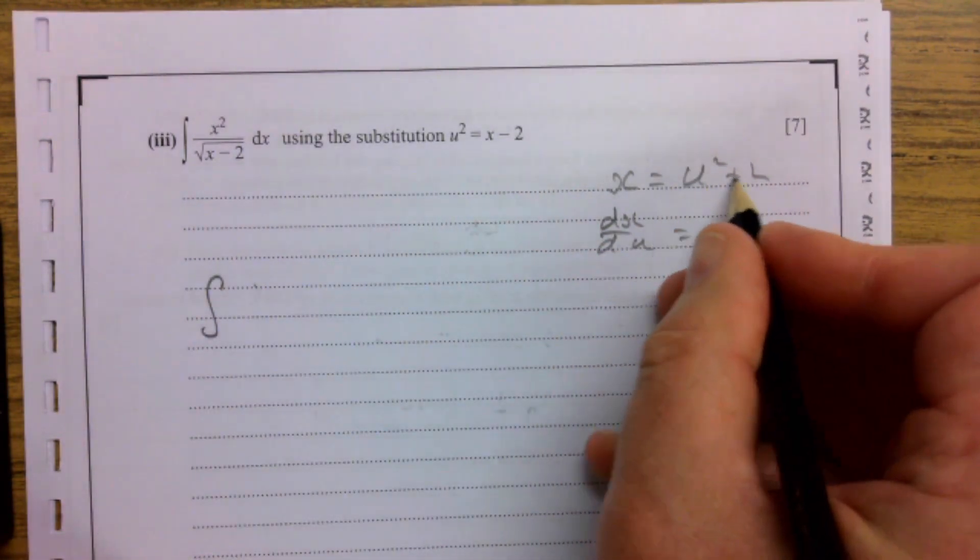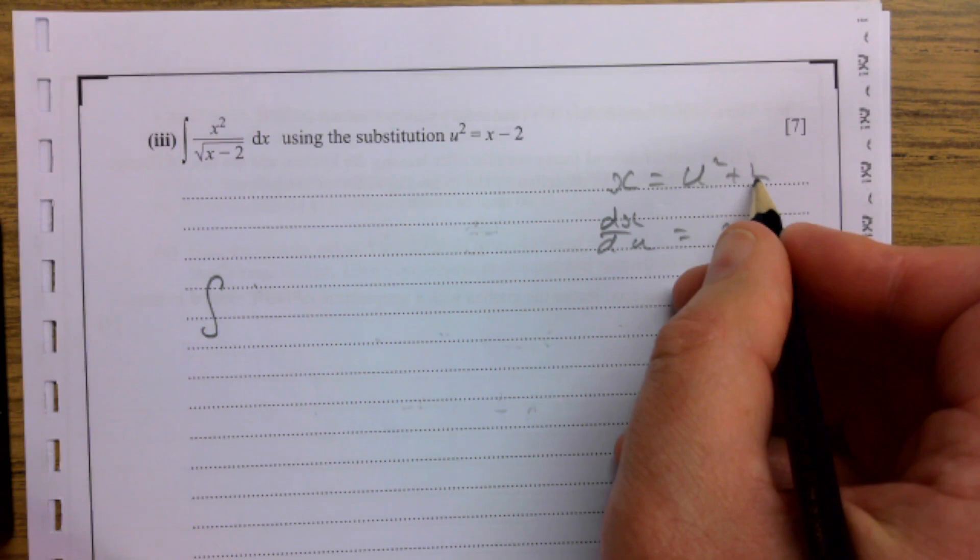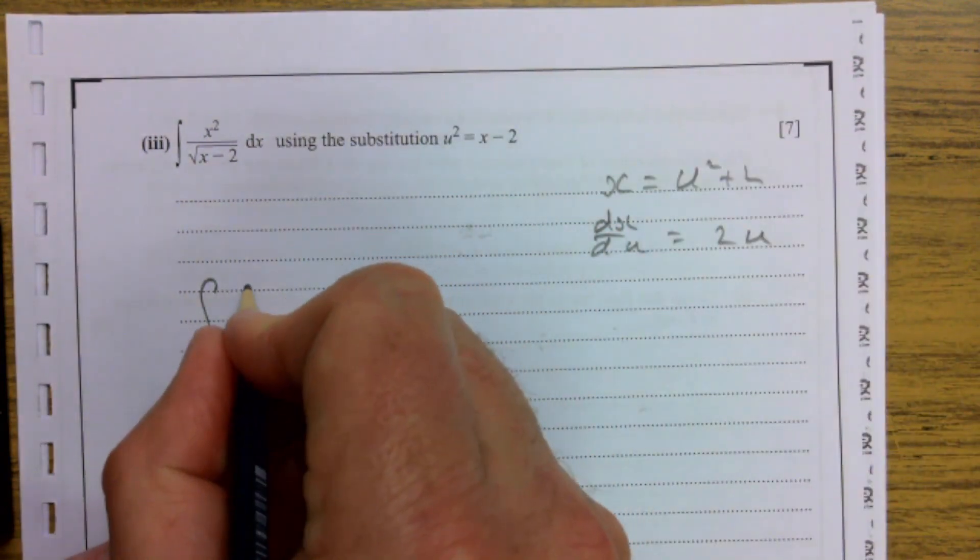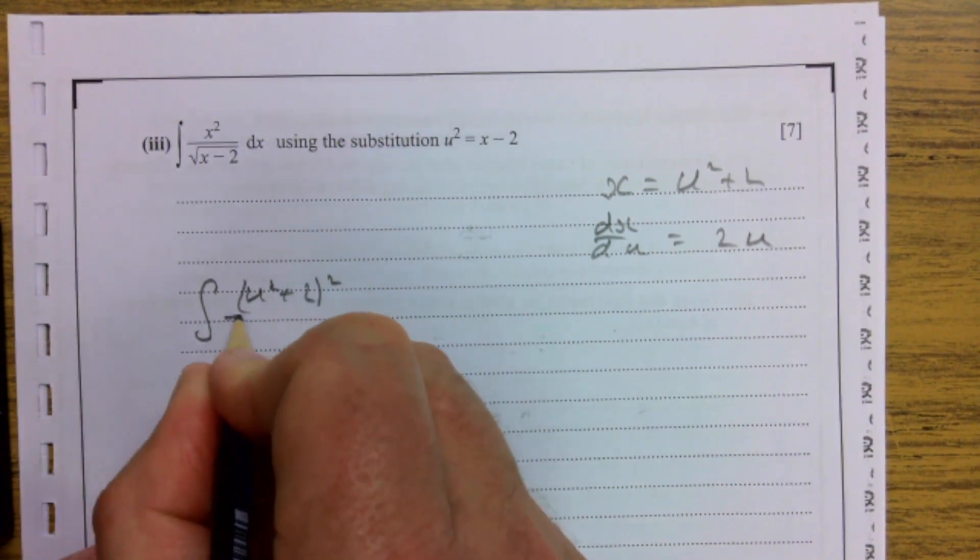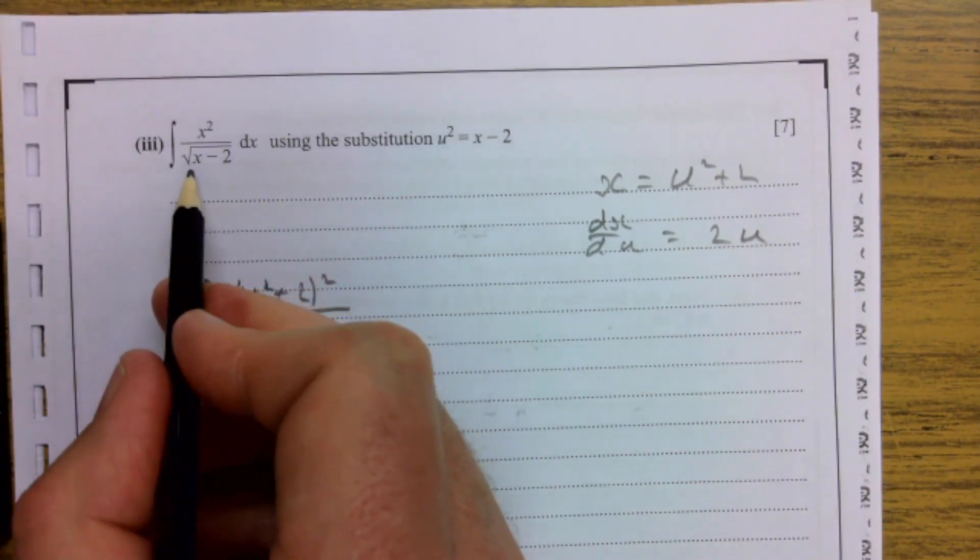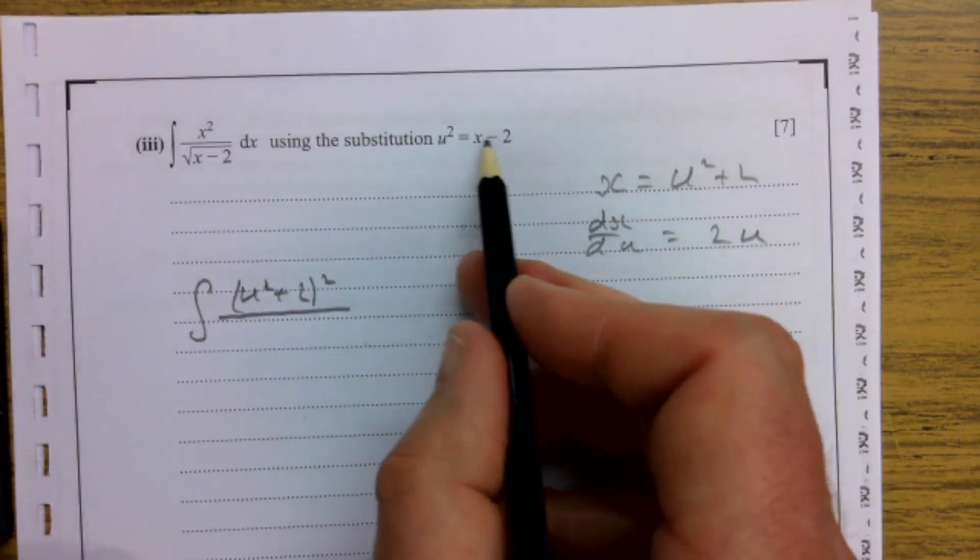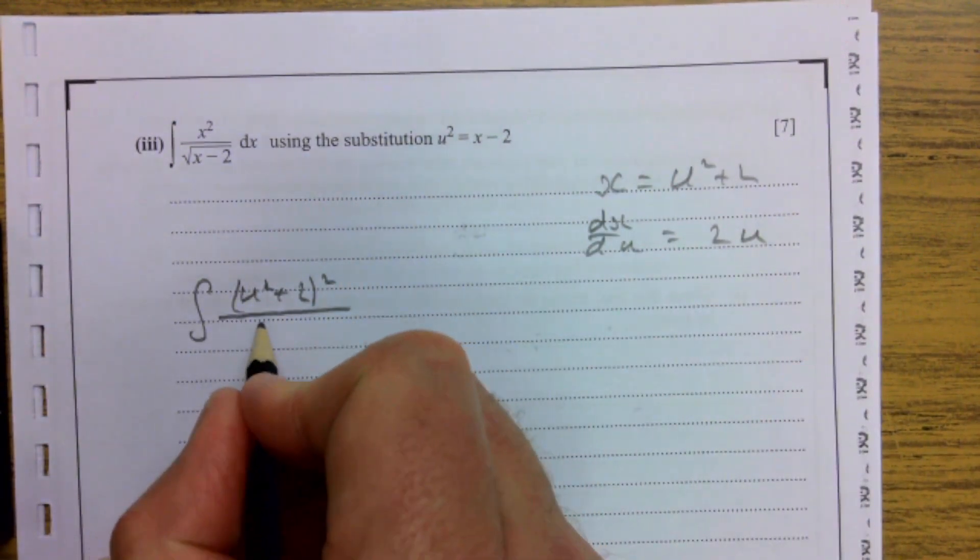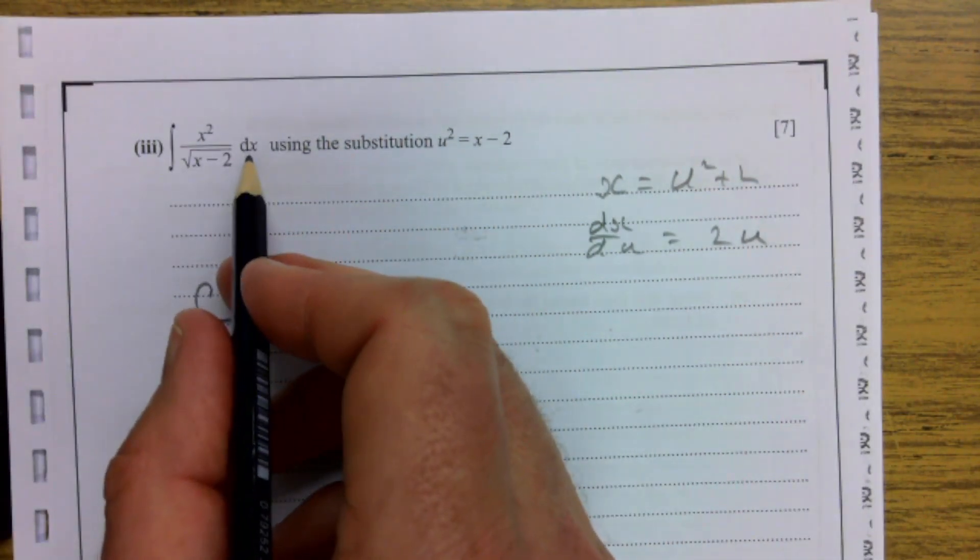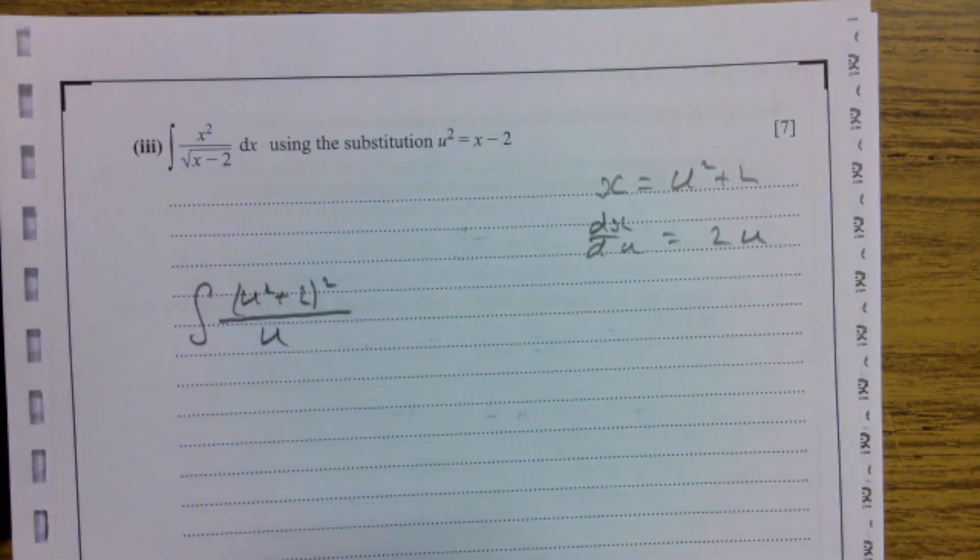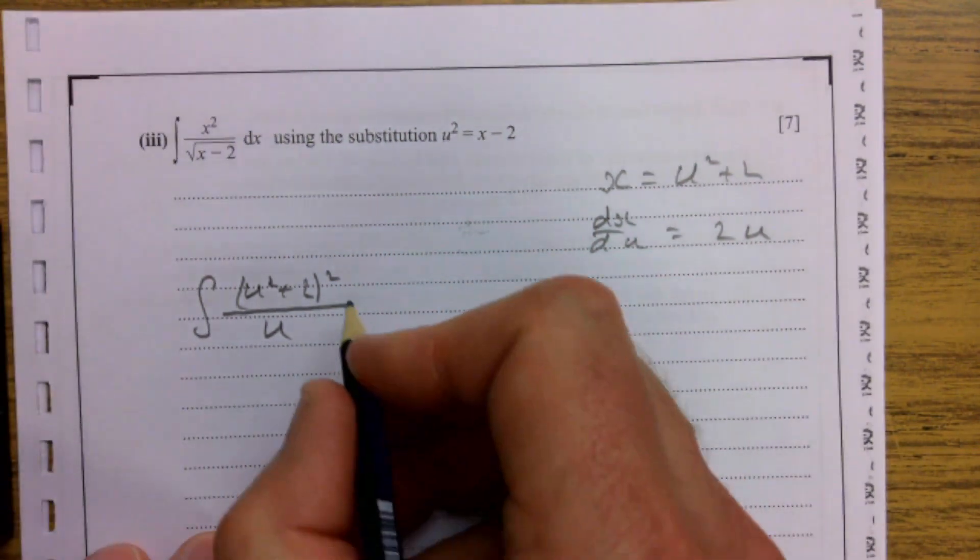My integration then becomes x squared, so it's going to be that only squared, u squared plus 2 all squared. And then that there is the square root of that, so that's just going to be a u. Then over here now, we're changing this dx, so it's dx by du du.